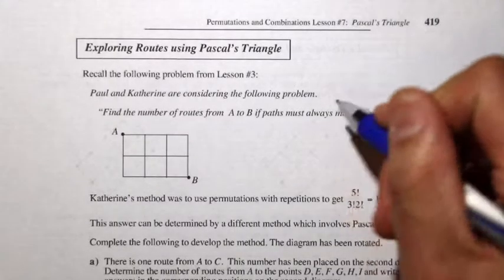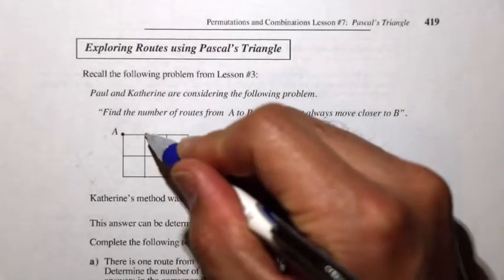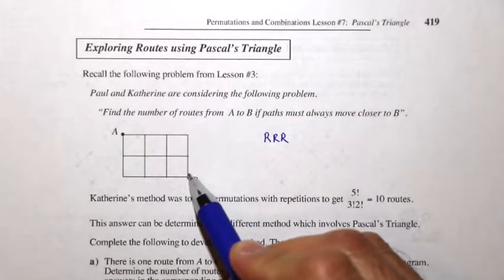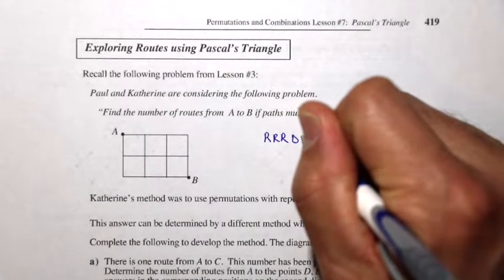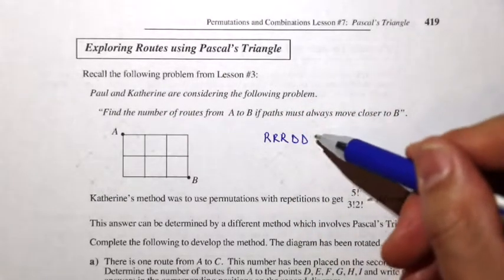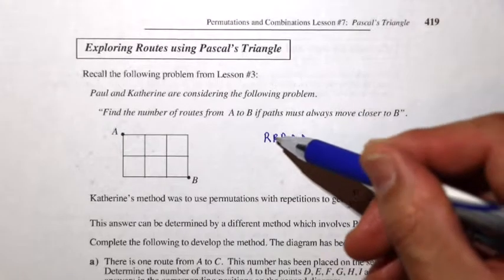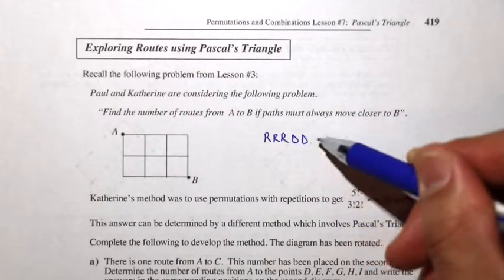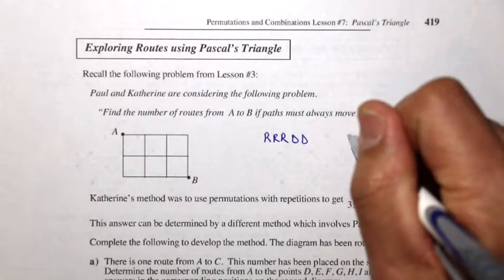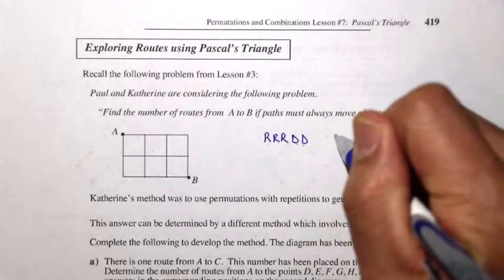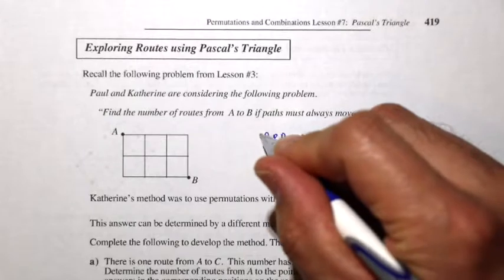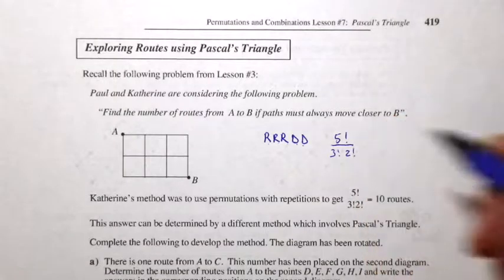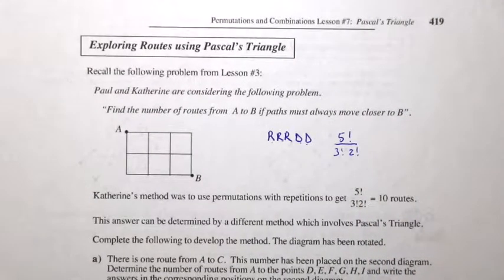Let's review that quickly. If we have 3 blocks that have to go right — R, R, R — and 2 blocks that have to go down — D and D — this is equivalent to arranging these 5 letters with R repeated 3 times and D repeated 2 times. We have a total of 5 letters, with 3 R's repeated and 2 D's repeated. So that's 10 routes.